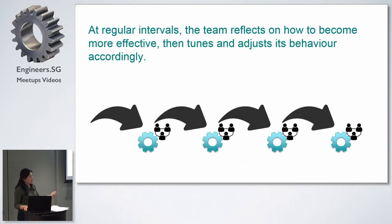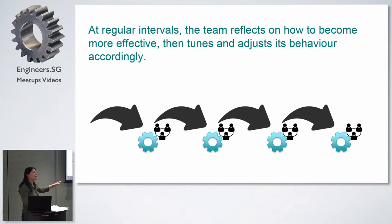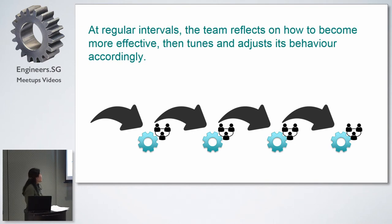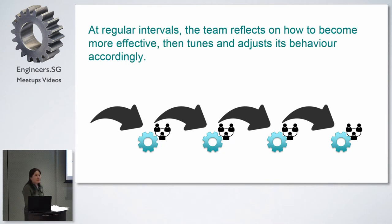At regular intervals, the team should reflect on how to become more effective. On every iteration, the team should come together and see how they can better themselves. This is like learning — learning has no ending, you're always improving. Different teams work differently, and joining a new team means working differently as well. So these are the 12 principles of Agile.